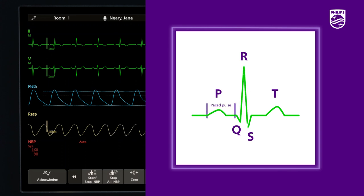For paced patients, the QRS is taller than the pace pulse. The R wave should be tall, not clipped or biphasic.